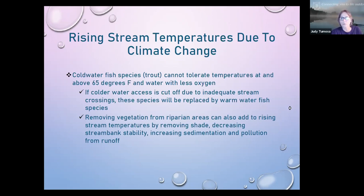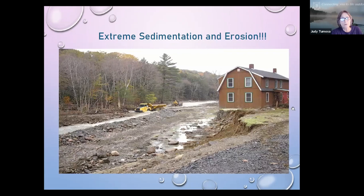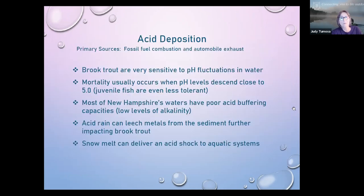Extreme storms can totally rearrange streams — the Coakley River down in Elstead was rearranged back in 2006 and they are still repairing some of that damage today. Acid deposition and pH fluctuations are also a concern. We're doing a better job on that recently because of regulations on coal facilities out west, but New Hampshire is a granite state and many of our waters do not have buffering capacity. Any extreme change in pH can't be buffered and is not good for the trout.